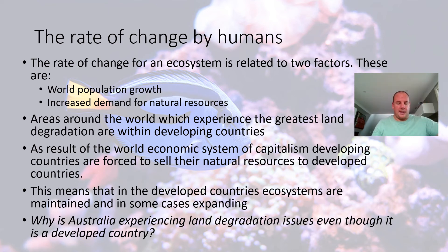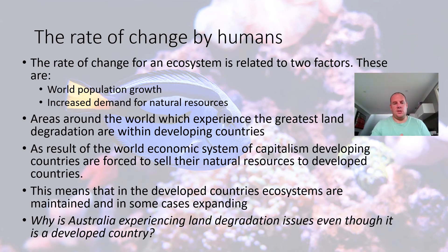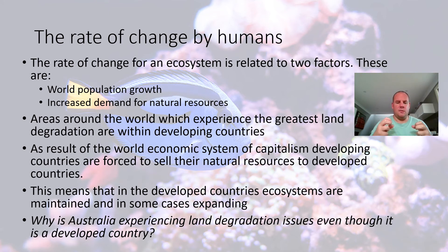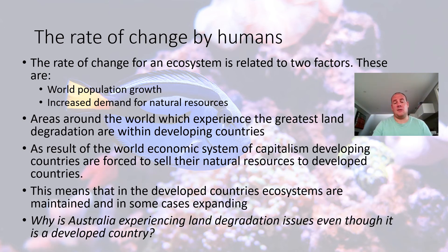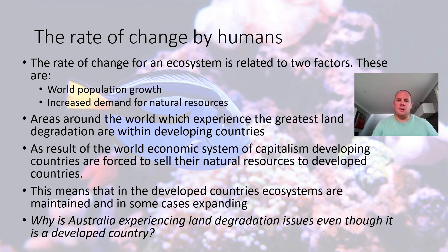We've got a system where developing countries are struggling to maintain their ecosystems, while in developed countries their ecosystems are better protected. There's an open-ended question I want you to think about: why do you think Australia is experiencing land degradation — where ecosystems are becoming extinct — even though it's a developed country? The rate of change by humans is dominated by those two factors: population growth and natural resource demand, and as a result we have significant issues in developing countries because they have the resources but not the money to sustain them.